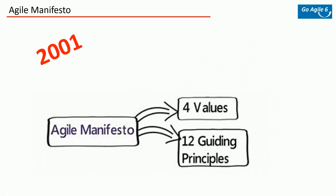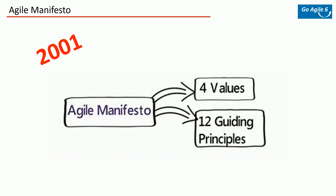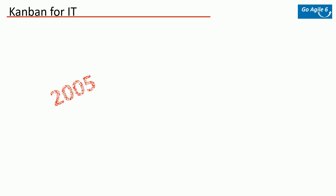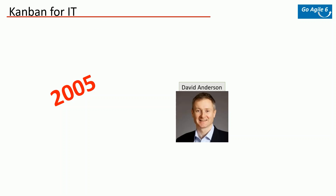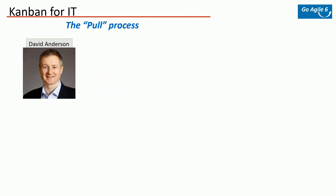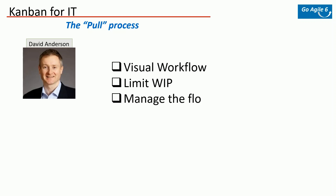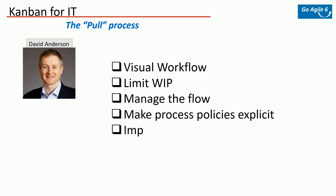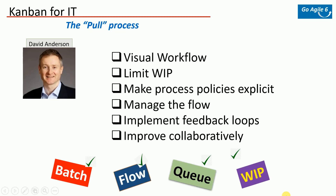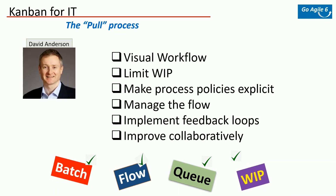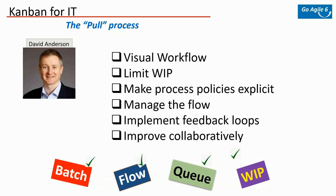The biggest breakthrough came in the software industry. From 2001 onwards there were active discussions around Agile and the Agile Manifesto. Around 2005, one gentleman by the name David Anderson took Toyota's production system and started applying it in the IT process, coming up with Kanban for IT. He predominantly called it the pull process and came up with six principles: visual workflow, limit work in progress, managing the flow, make process policies explicit, implement feedback loops, and improve collaboratively. Key concepts becoming prominent in the system are batch size, flow, queue, and work in progress.